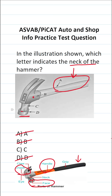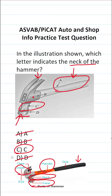This part right here that connects the claw with the face of the hammer is called the neck of the hammer. So the correct answer is C — C is the neck of the hammer.